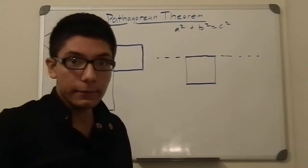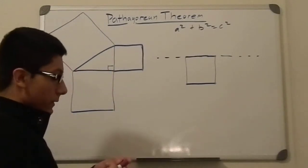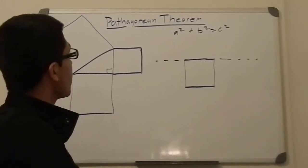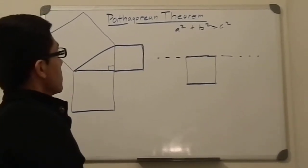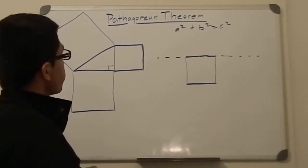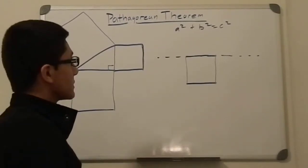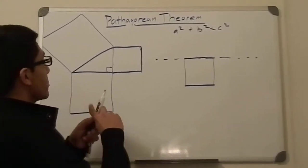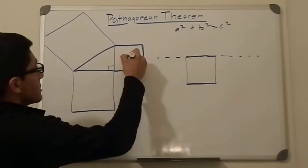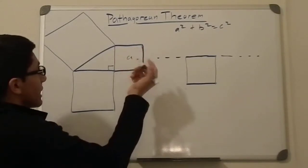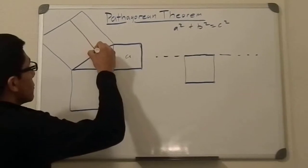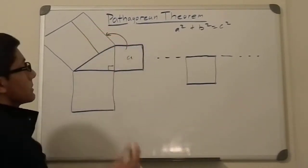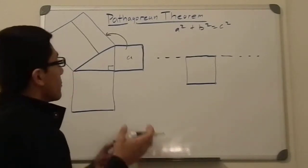Hey guys, welcome back. In this video I'm going to prove the Pythagorean theorem with a geometric approach. The approach here is to prove that this area — let's call this area A — is the same area as that region over there. That's the core idea of the proof.